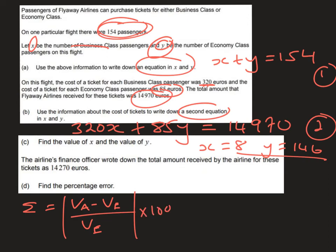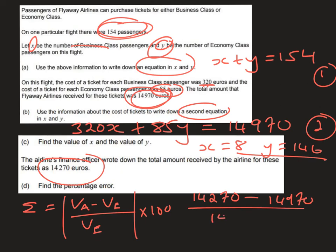In the context of the question, VA is the approximate value because the airline's finance officer wrote down the amount received as 14,270 euros. We subtract the exact value of 14,970, divide by 14,970, take the positive value of that, and multiply by 100. This gives a percentage error of 4.68%, correct to three significant figures.